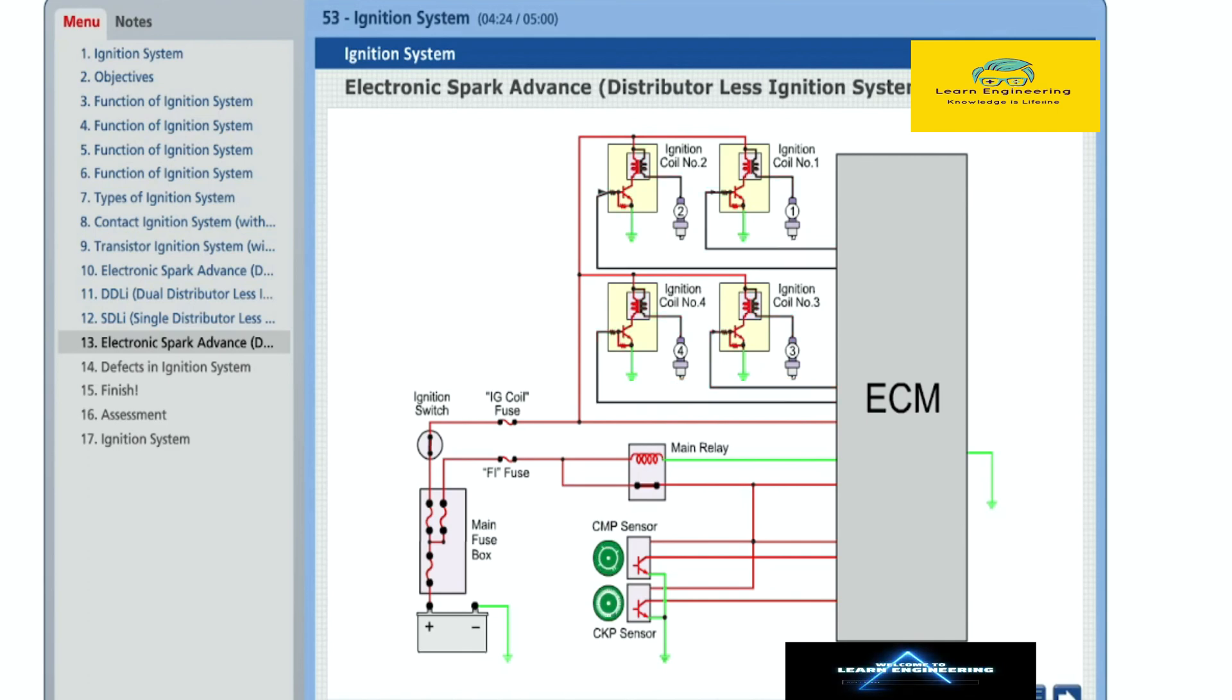ECM also gets input from other sensors such as throttle position sensor, engine coolant temperature sensor, manifold absolute pressure sensor, mass airflow sensor and intake air temperature sensor and knock sensor to determine various driving and load conditions and adjust ignition advance accordingly.